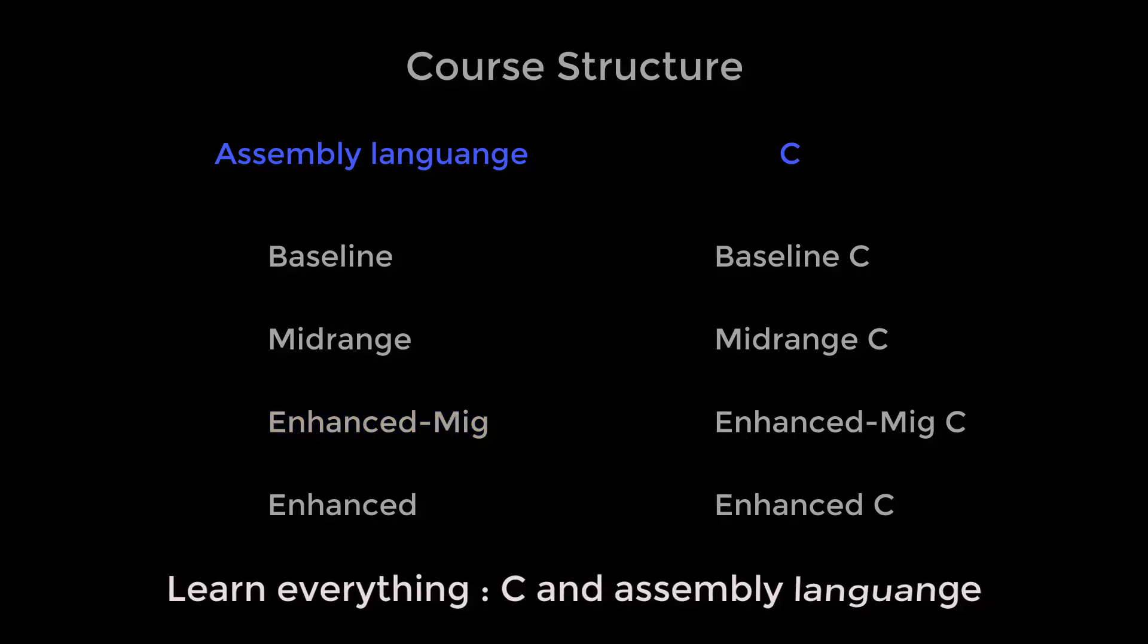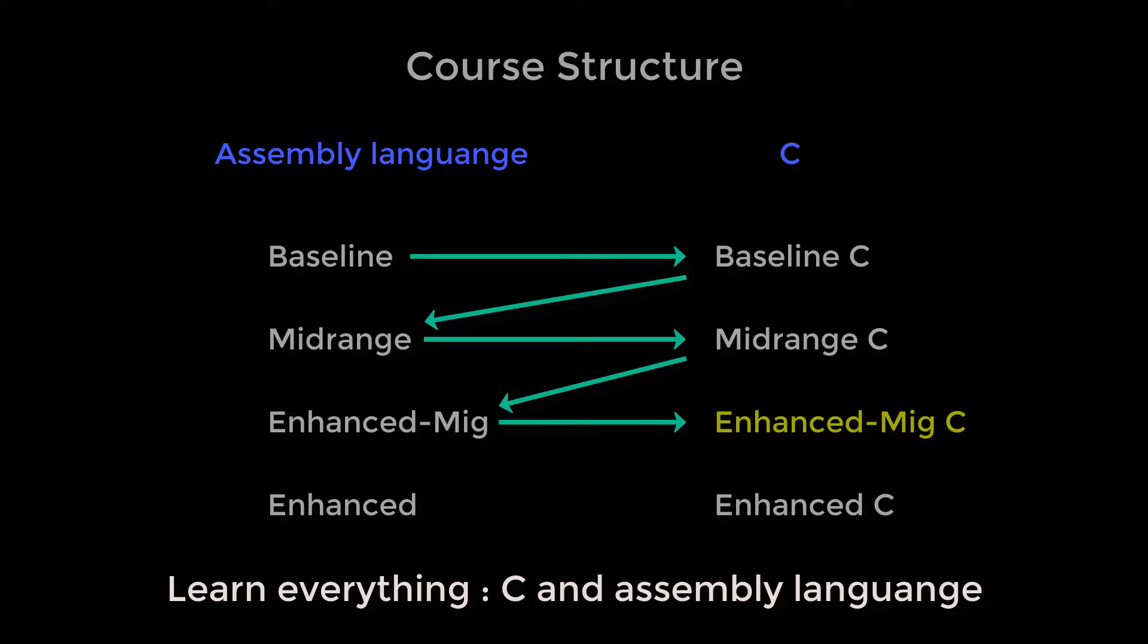If you want to learn C in addition to assembly language, it's best to start with baseline assembly language, learn about the baseline PIC architecture, and what's going on under the hood, then see how the same tasks can be performed on the same devices using C, in the baseline C lessons. Then midrange assembly language, to learn about the midrange architecture, then do the C versions of those lessons. Finally, migrating to enhanced midrange assembly language, followed by the corresponding C lessons. That's a lot of lessons to go through, but you'll have a pretty thorough understanding by the end of it.